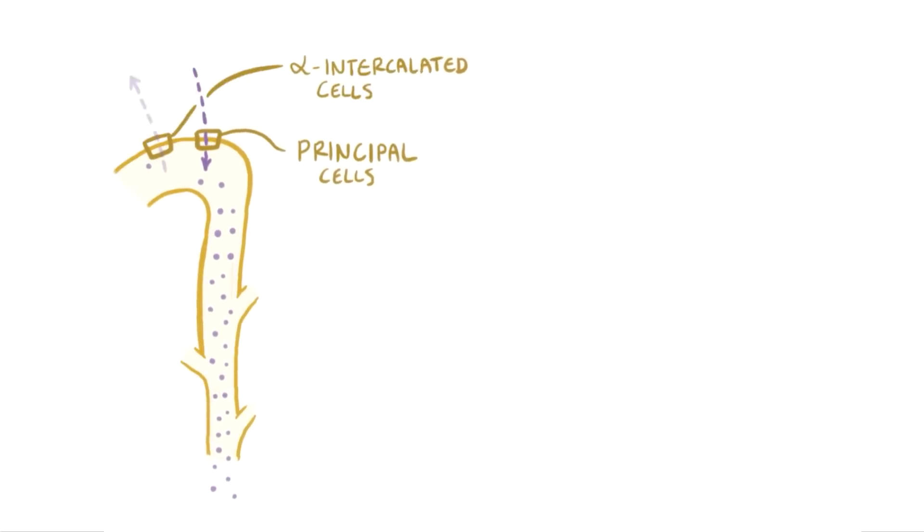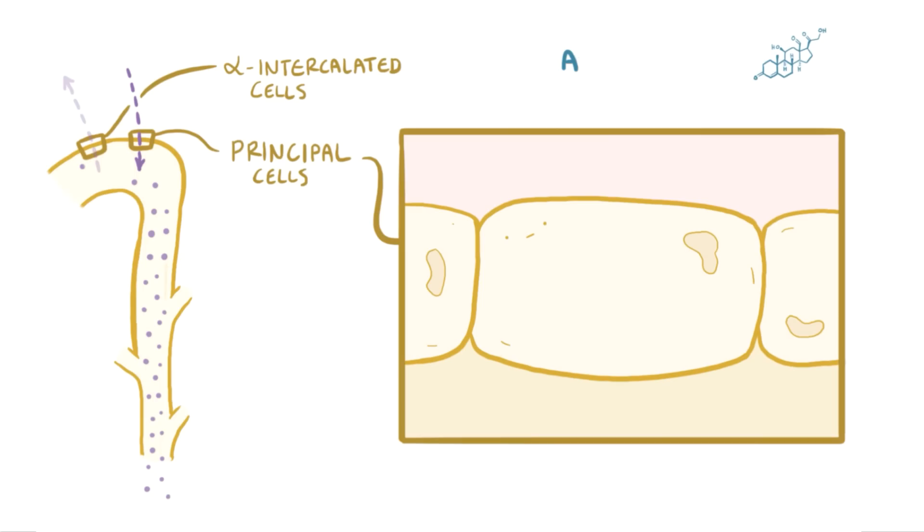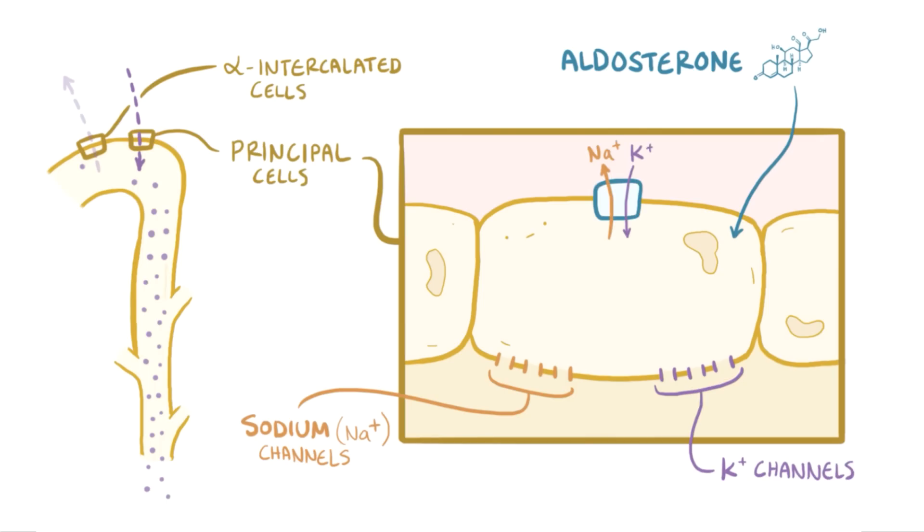Now, an important hormone that helps regulate potassium reabsorption or secretion in the kidneys is aldosterone. Aldosterone increases the number of sodium channels and the number of potassium channels on the lumen side of the principal cell, as well as sodium-potassium pumps on the basolateral side of the principal cells. This allows sodium to move from the tubule into the cell, and then get pumped into the blood by the sodium-potassium pumps. As the pumps collectively move more sodium into the blood under the influence of aldosterone, more potassium gets pumped into the cell, which raises the intracellular potassium concentration. Having more intracellular potassium and also having more potassium channels promotes potassium secretion.